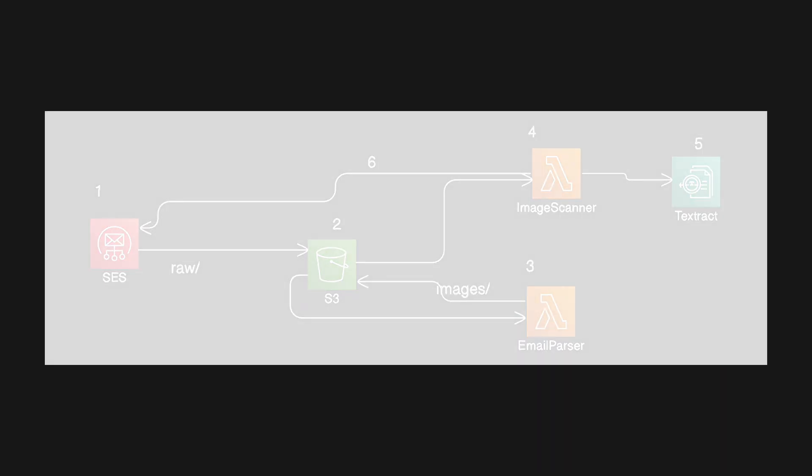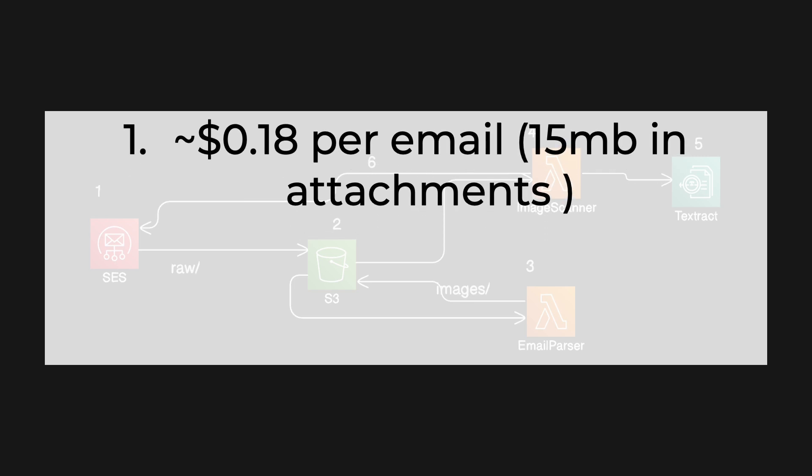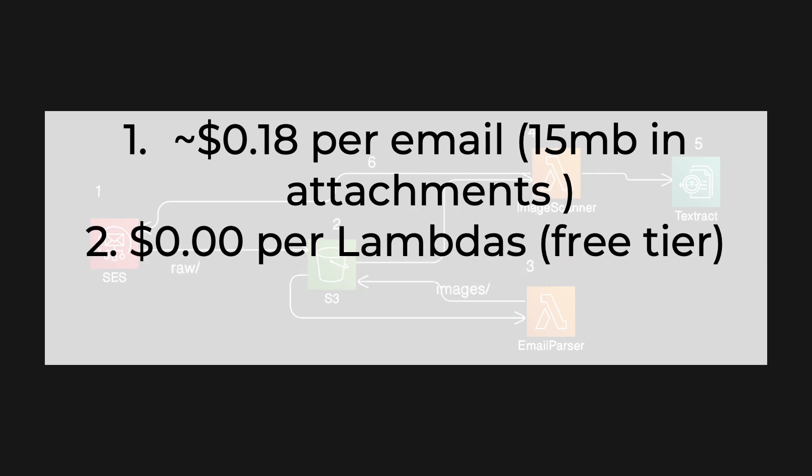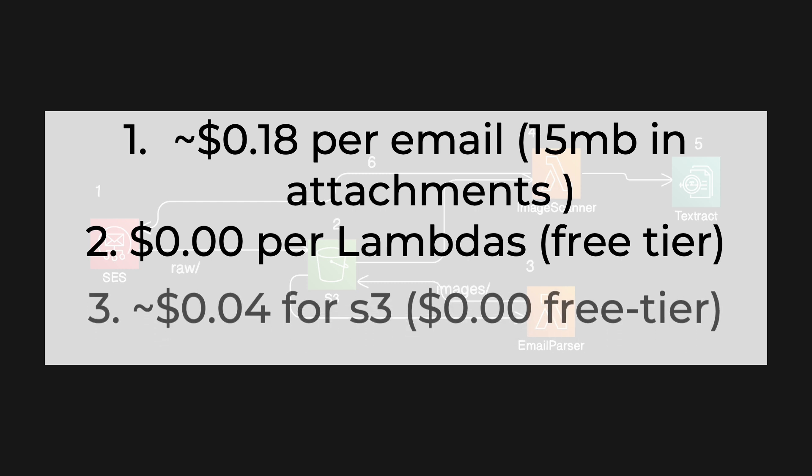Can I decrease costs? Nothing on the incoming side, but on the outgoing I could potentially batch image analysis results and send fewer emails — however, given free tier limits and how few emails she'll actually send, the engineering cost isn't worth it. Using the AWS pricing model, each email will cost just a few cents: roughly 15 MB attachments, near zero for Lambda due to free tier, and about four cents for S3. SES is the largest cost due to sizable attachments, but overall it's very cheap. Let me know what you think and if you have any questions — thanks!